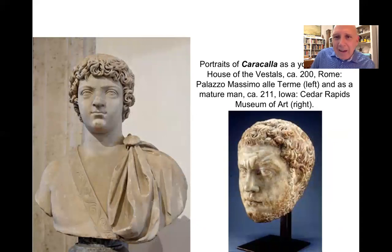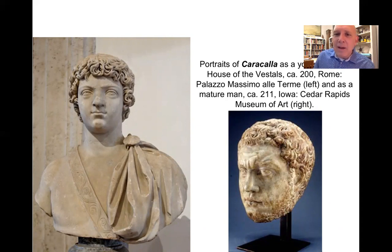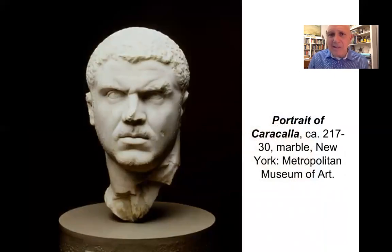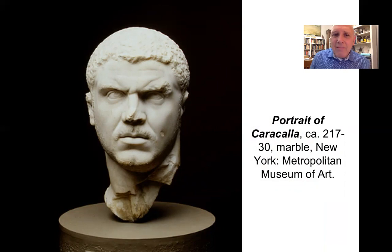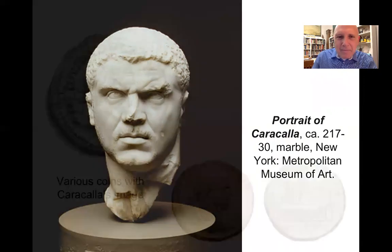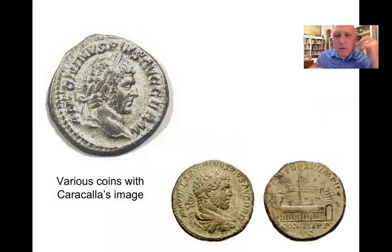Here are some portraits of Caracalla as a young man — a wonderful image from the House of the Vestals in the Roman Forum, dating to about 200, and another portrait currently in Iowa. The finest portrait of Caracalla, in my opinion, is at the Metropolitan Museum of Art in New York City — a brooding individual who is clearly very serious about his role, with quite a malignant-looking expression. He was a brooding, tempestuous figure in Roman history. Coins also show him as a confident, virile, aggressive individual.